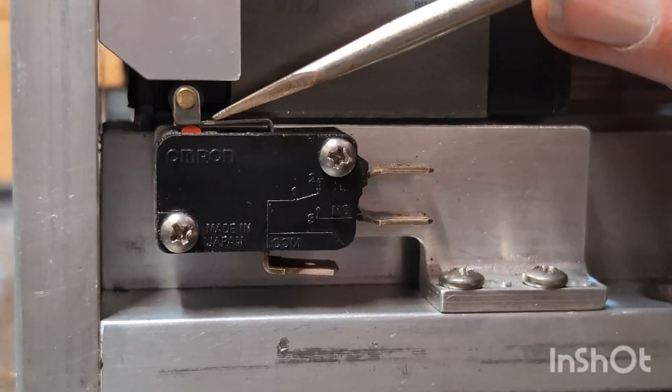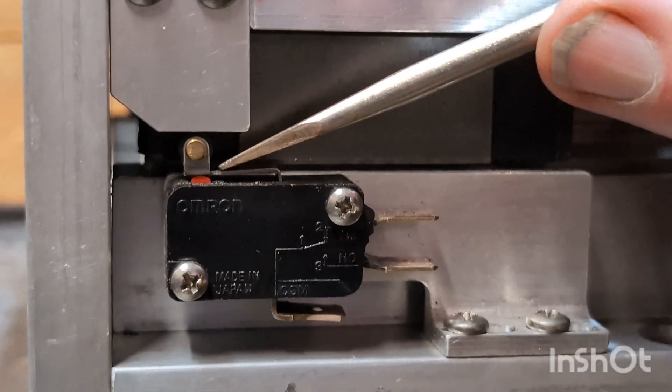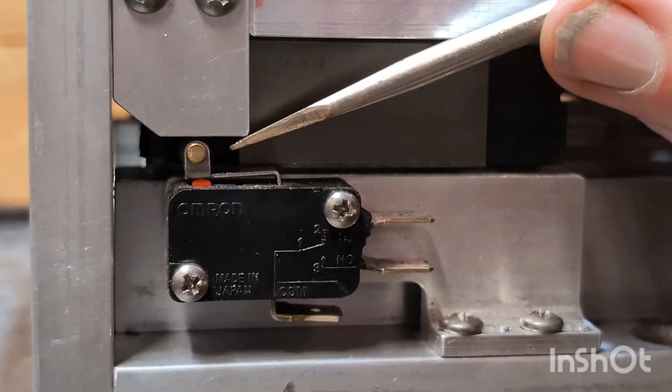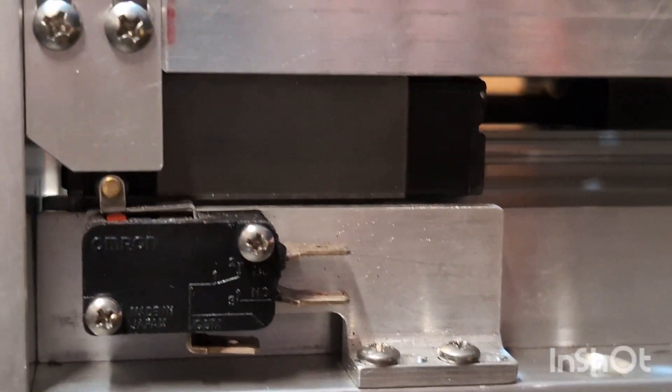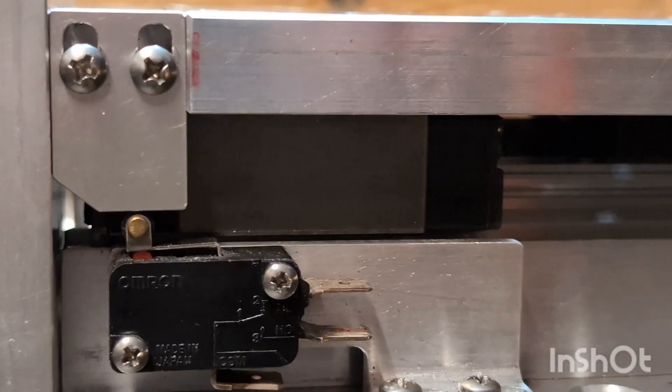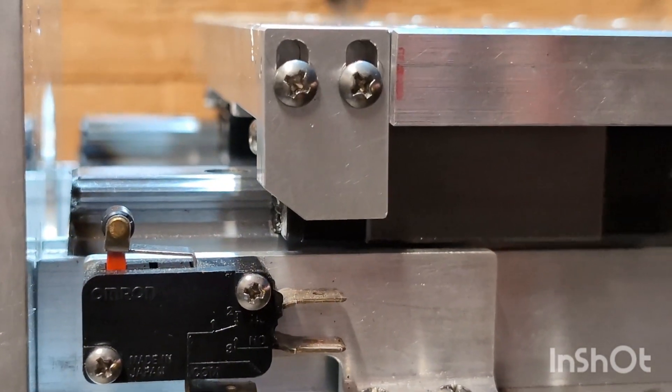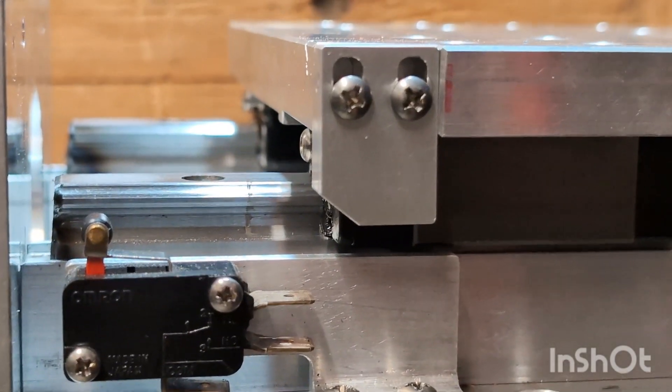If I go past that limit switch in, let's say, a runaway condition, nothing happens. I can do this all day long, no problem. Now if you've got a proximity switch, same thing.